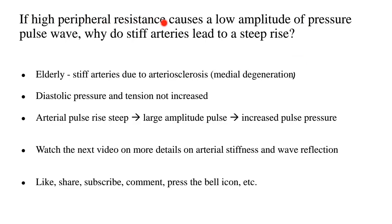Finally, if high peripheral resistance causes a low amplitude pressure pulse wave, why do stiff arteries lead to a steep rise of the pressure pulse wave? These are completely different aspects of the arterial tree. In elderly patients with stiff arteries due to arteriosclerosis — medial degeneration of the arterial wall — the diastolic pressure and tension are not increased; diastolic tension is increased when there is overall high peripheral resistance. In cases of stiff arteries, these lead-pipe-like arteries fail to expand during systole when the stroke volume tries to expand the aorta and arterial tree. So the arterial pulse rise is steep, there is a large amplitude pulse, and hence an increased pulse pressure.